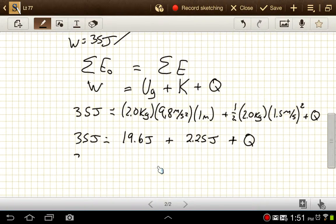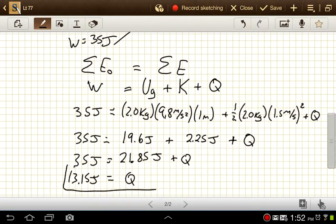So 35 joules is equal to 21.85 joules, plus Q, and then we'll subtract the 21.85 joules from both sides, and we'll get 13.15 joules, 13.15 joules of heat in this system now.